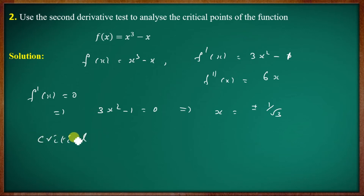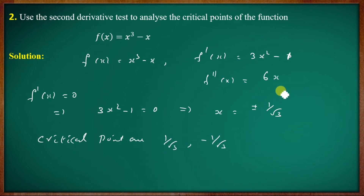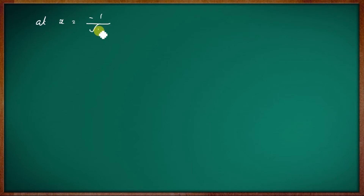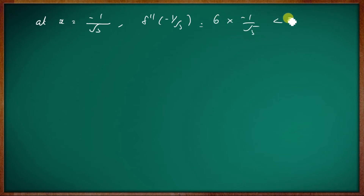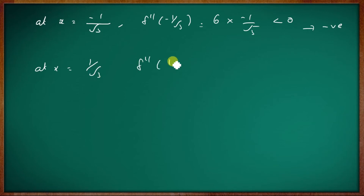The critical points are 1 by root 3 and minus 1 by root 3. At x equal to minus 1 by root 3, f double dash of minus 1 by root 3 equal to 6 times minus 1 by root 3, which is less than zero — it is negative. At x equal to 1 by root 3, f double dash of 1 by root 3 equal to 6 times 1 by root 3, which is greater than zero — it is positive.